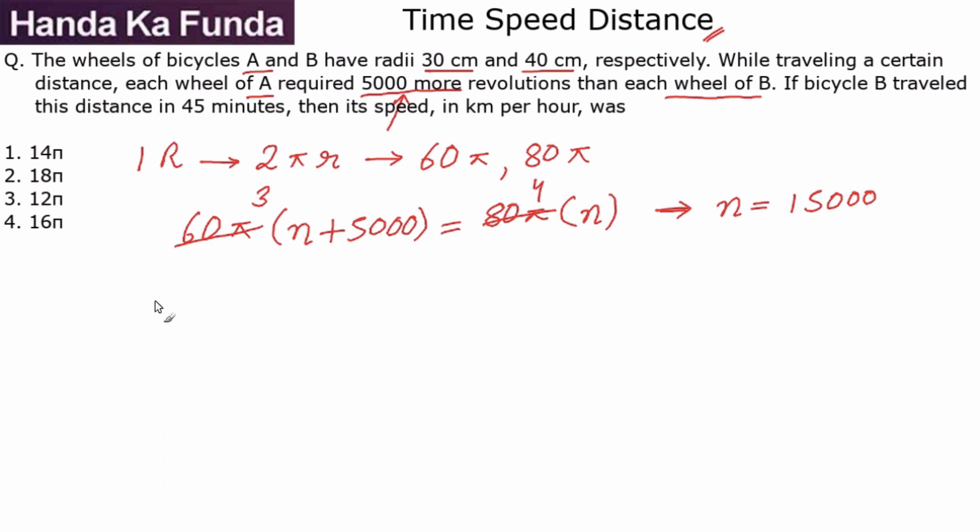Now, what is the total distance covered? Well, in one revolution they are covering a distance of 80π, so in 15,000 revolutions the distance that will get covered is 15,000 times 80π. But what unit is this? This is in centimeters.